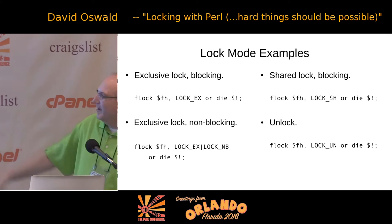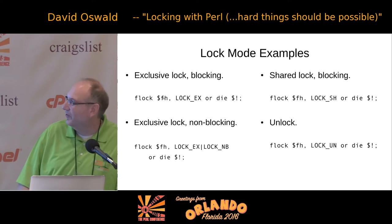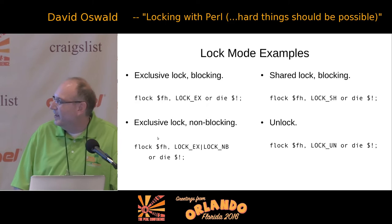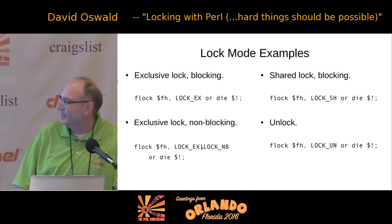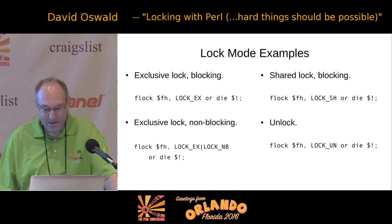Let's look at several different examples, assuming we've already opened a file and the file handle FH really does point to a file. In the first example, we're getting an exclusive blocking lock or die. In the next example, we're getting an exclusive lock non-blocking — that's what the bitwise OR operator is doing. In the third example, we're getting a shared lock, and we could also OR in the non-blocking-ness if we wanted to. In the fourth example, we're using unlock.